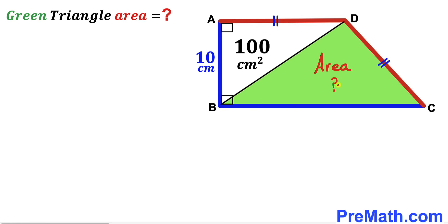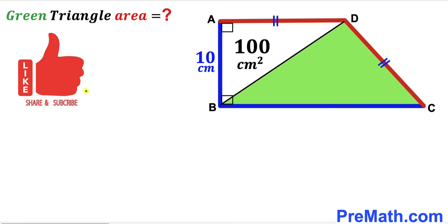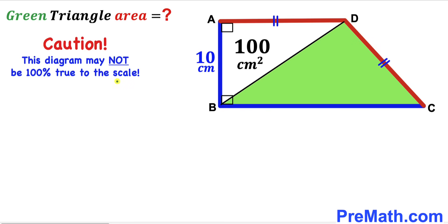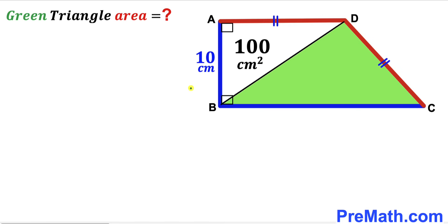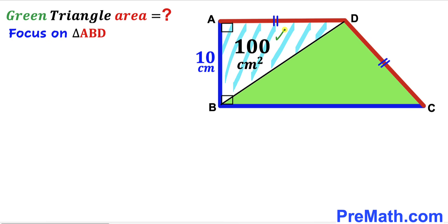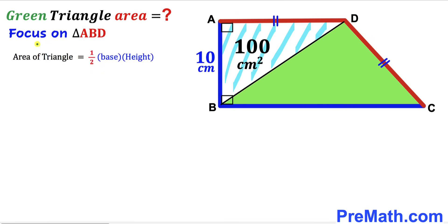Please don't forget to give a thumbs up and subscribe, and keep in mind that this figure may not be 100 percent true to scale. Let's get started. First, let's focus on the white right triangle ABD. We know the area of this triangle is 100 and the side length AB is 10 centimeters. Now we are going to figure out side AD.